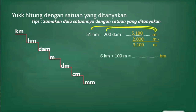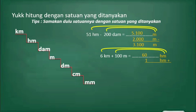Untuk soal yang kedua: 6 kilometer ditambah 100 meter sama dengan berapa hektometer? Itu artinya harus kita ubah satu-satu dulu ke dalam hektometer. Yang pertama, 6 kilometer berapa hektometer? Dari kilometer ke hektometer turun satu tangga, itu artinya dikalikan dengan 10. 6 dikalikan 10 hasilnya adalah 60. Yang kedua, 100 meter diubah ke hektometer: dari meter ke hektometer naik 2 tangga, dibagi dengan 100. 100 dibagi 100 hasilnya adalah 1. Jadi 60 hektometer ditambah 1 hektometer hasilnya adalah 61 hektometer.